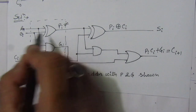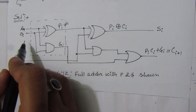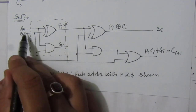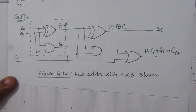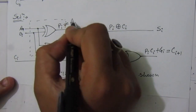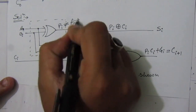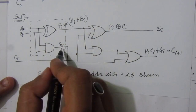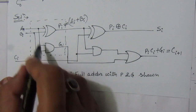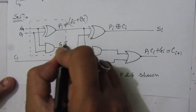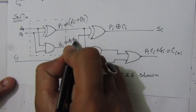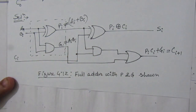This is an XOR operation, so we write A_i XOR B_i. If we consider a half adder, this is A_i plus B_i. So we can write P_i as A_i plus B_i. Similarly, the carry generate is the AND operation, so we can write G_i as A_i times B_i, because we have an AND gate.